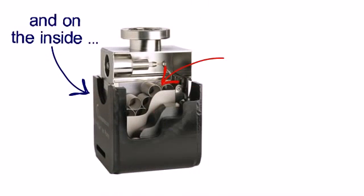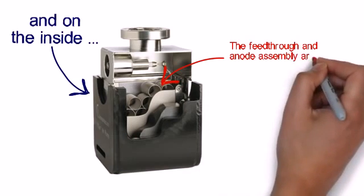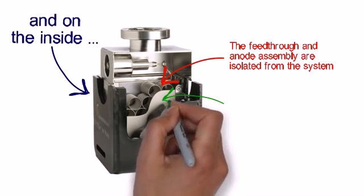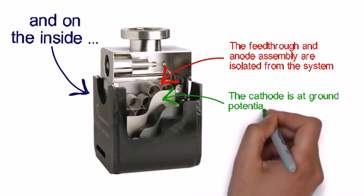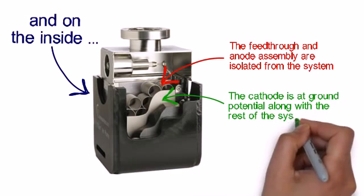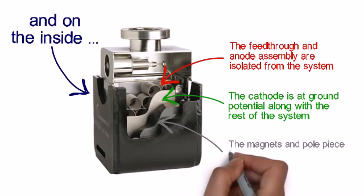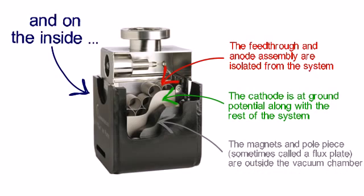We start with a feed-through and an anode assembly made out of stainless steel anode tubes. Those are isolated from the rest of the system, electrically isolated, that is. Pointing to the green there are cathodes that are at ground potential along with the rest of the system. And external to those are magnets and pull pieces, sometimes called flux plates, that are on the outside of the vacuum chamber.